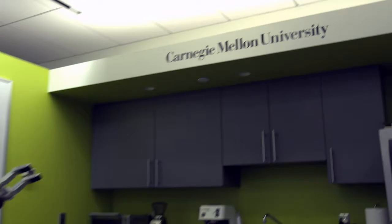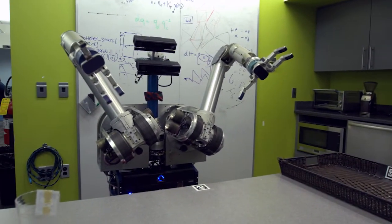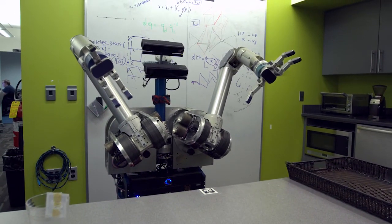Herb stands for Home Exploring Robot Butler. It's a robot that has two arms and a Segway base that we've been building since 2005. He is our platform for autonomy. We're trying to build robots that can be completely autonomous, can wander around in your home or office or in a disaster rescue scenario.